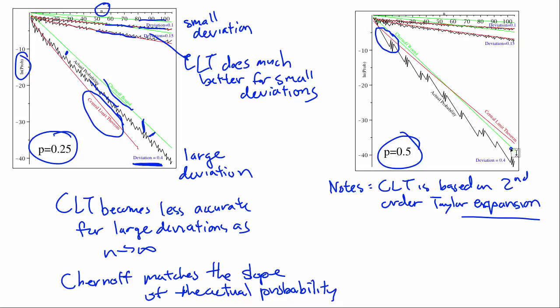Therefore, this is why Chernoff is more effective for larger deviations. Although the CLT starts really closely at the beginning, it becomes inaccurate either above or below. You can't tell, which is why it's inaccurate in either case.